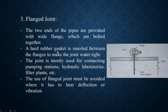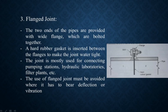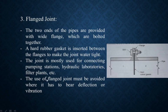A hard rubber gasket is inserted between the flanges to make the joint water tight. This hard rubber material is attached under the flanges so the gap between the flanges does not leak water. The rubber gasket fills the gap between the flanges, making the joint water tight. This joint is mostly used for connecting pumping stations, hydraulic laboratories, filter plants, etc.